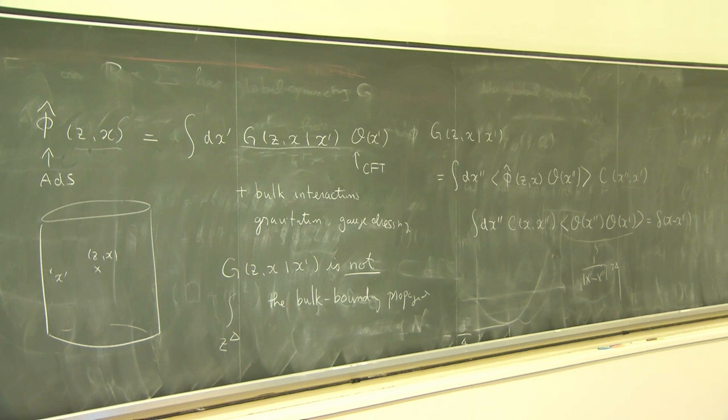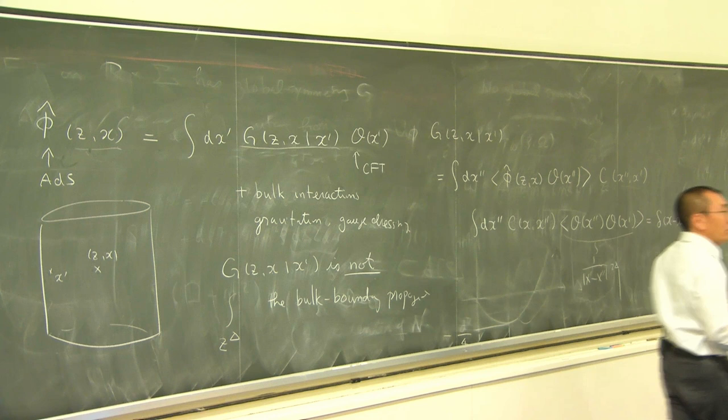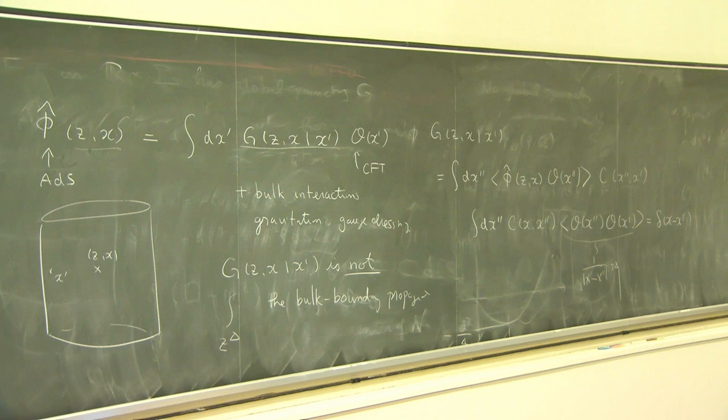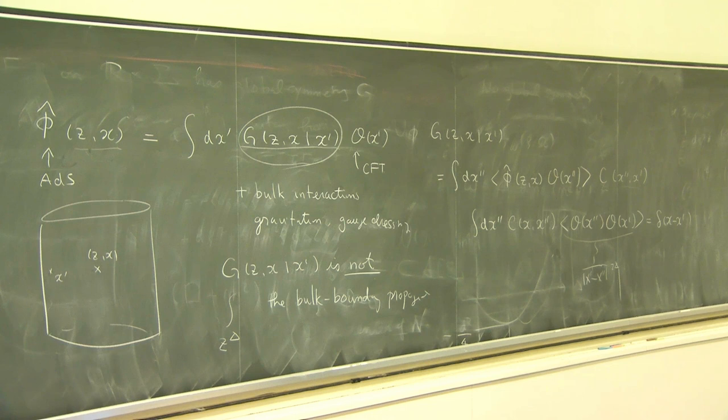It was pointed out that you don't have to do this integral over the entire boundary, but only over some subspace of the boundary points — and this is going to be very important for the rest of the talk. It was already known that you can choose this smearing function in various different ways, just like when you define a propagator and choose boundary conditions. This was shown by Hamilton, Kabat, and Lifschytz.